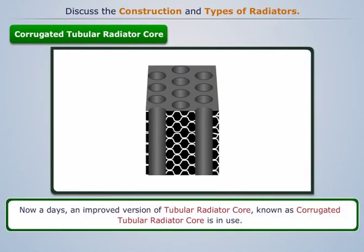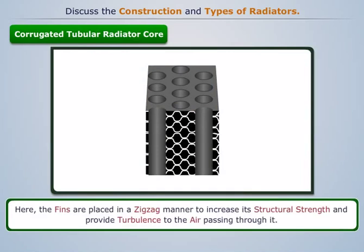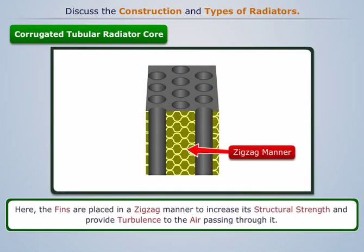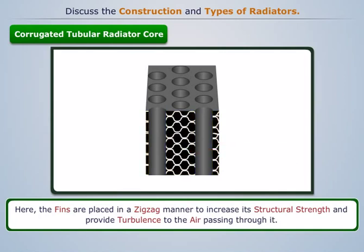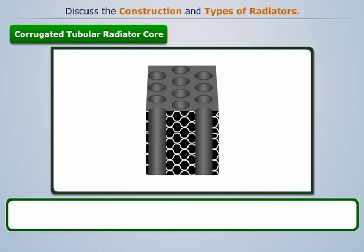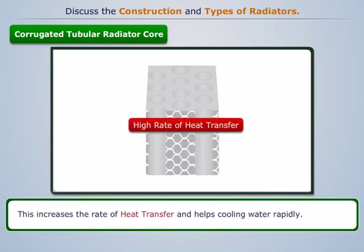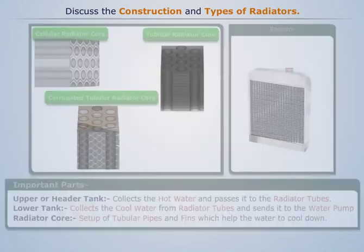Nowadays, an improved version of tubular radiator core, known as corrugated tubular radiator core, is in use. Here, the fins are placed in a zigzag manner to increase its structural strength and provide turbulence to the air passing through it. This increases the rate of heat transfer and helps cooling water rapidly.